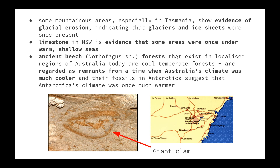Limestone has been found in New South Wales and it is evidence that some areas were once under warm, shallow seas. In particular, areas around Jenolan Caves is where a giant clam fossil was found in sandstone rock. Jenolan Caves is a good couple of hours drive from the coastline, but these giant clams were obviously an aquatic organism and found in sandstone that matches areas now found where shallow waters are.